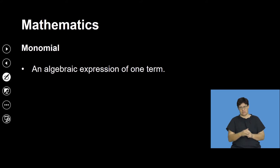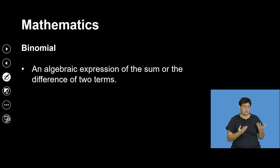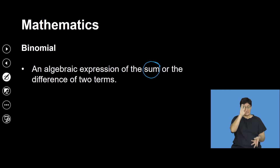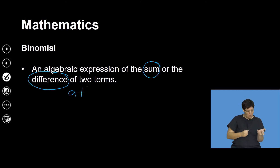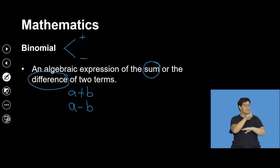We also have what we call a monomial — an algebraic expression of one term. Mono means one. Then a binomial is an algebraic expression that is either a sum or a difference of two terms — not when you are multiplying or dividing terms. That has nothing to do with it being a binomial. So a binomial is like A plus B or A minus B. The two operations that govern a binomial are plus and minus — not multiply, not division.